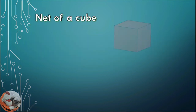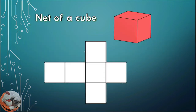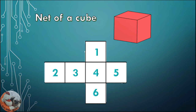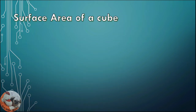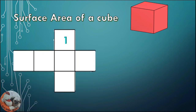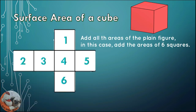For example, we have here a cube. This is the net of a cube and it has 6 faces. So to get the surface area of a cube, first we have to know the area of the square.